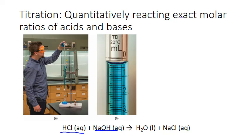To do this we use a piece of specialized glassware called a burette, depicted here. It's a long cylinder with a stopcock at the bottom that's marked with precise volume measurements, similar to a graduated cylinder except the volume markings start at zero milliliters at the top, because the markings indicate the volume of solution dispensed from the burette. When the burette is full to the zero line no solution has been dispensed, and as you open the stopcock and allow solution to flow out, the volume markings tell you how much solution has left the burette.